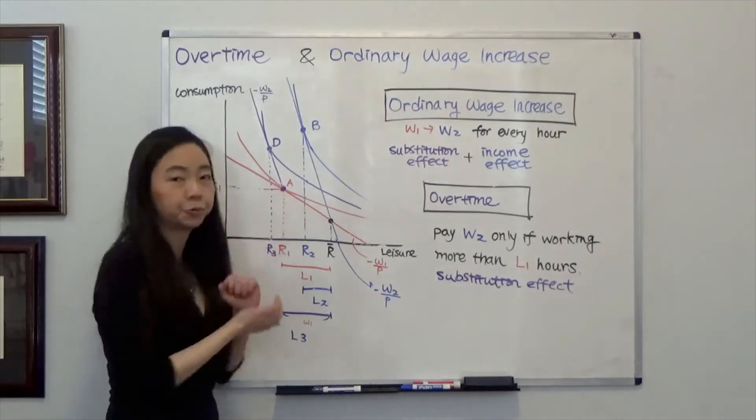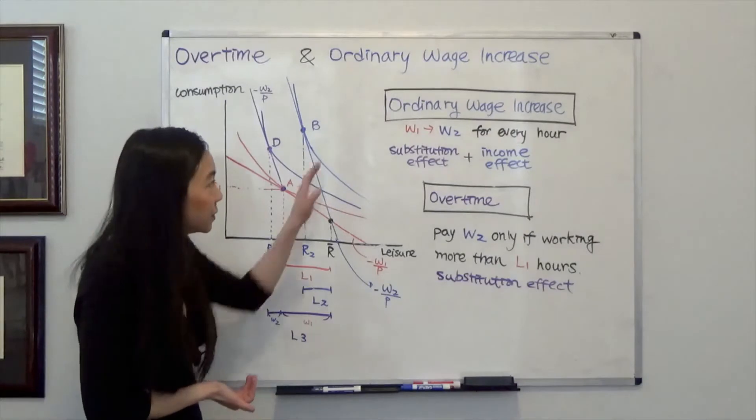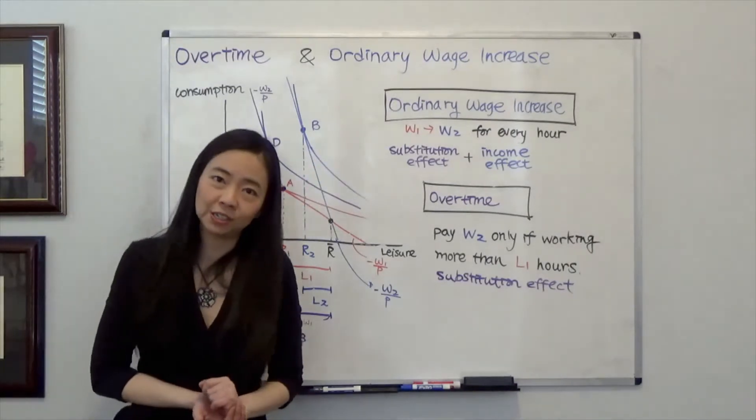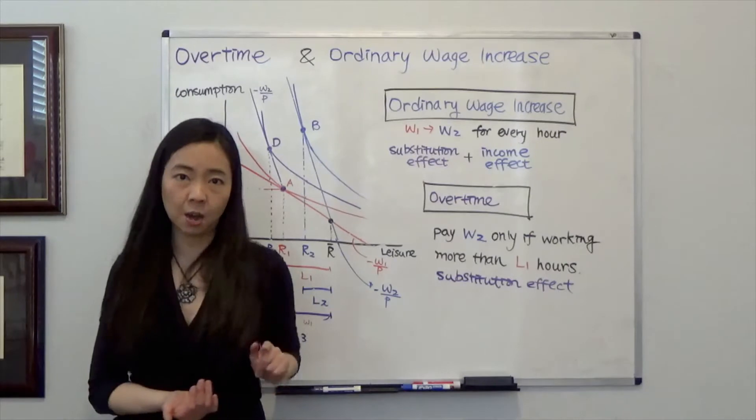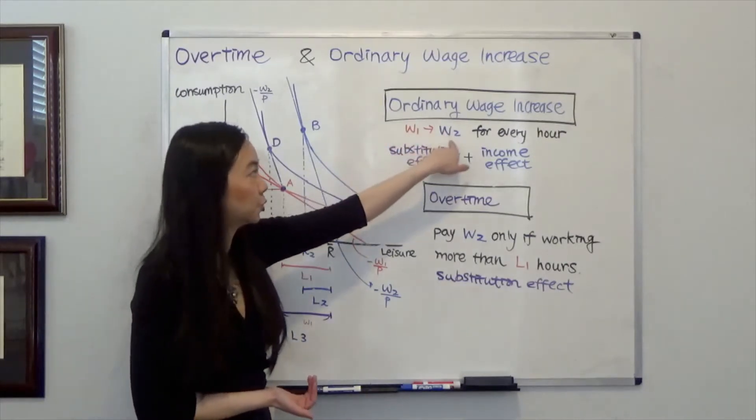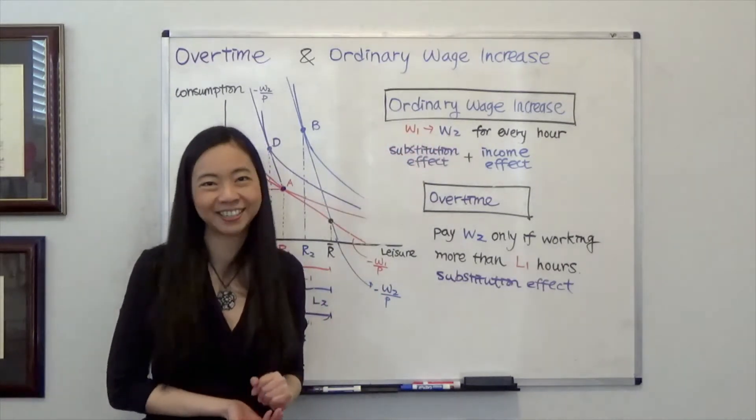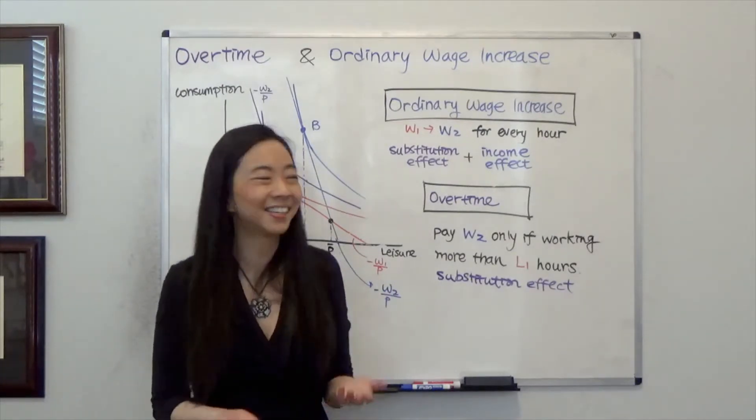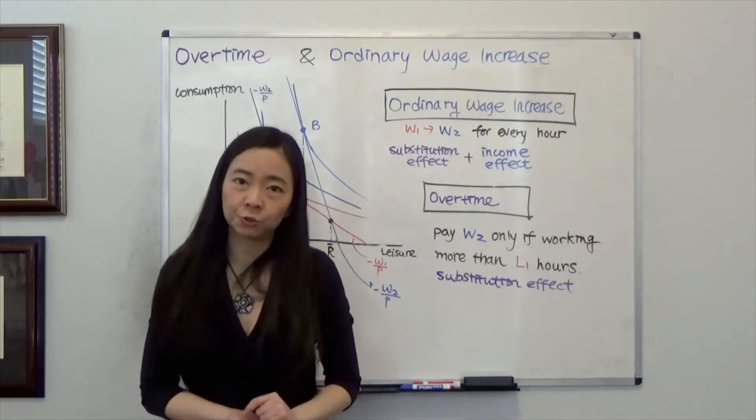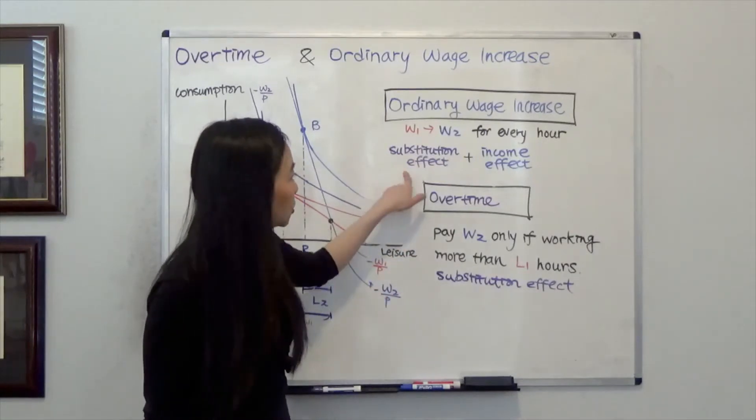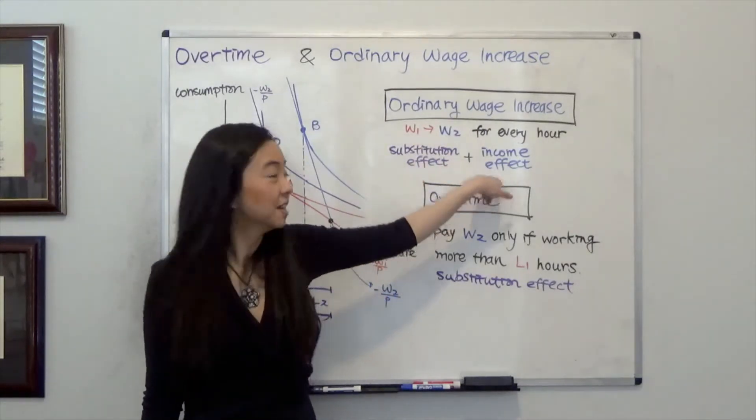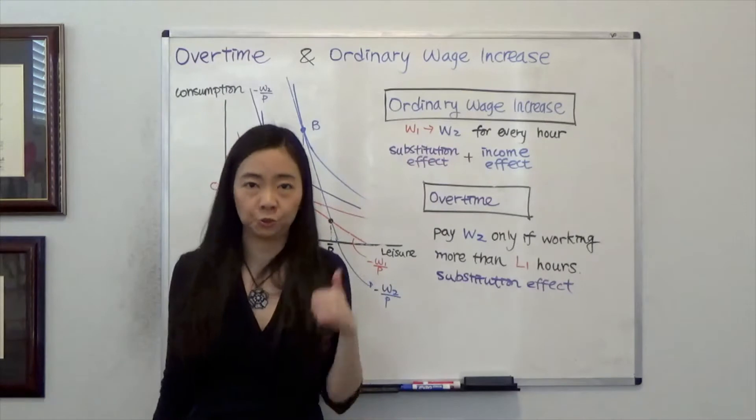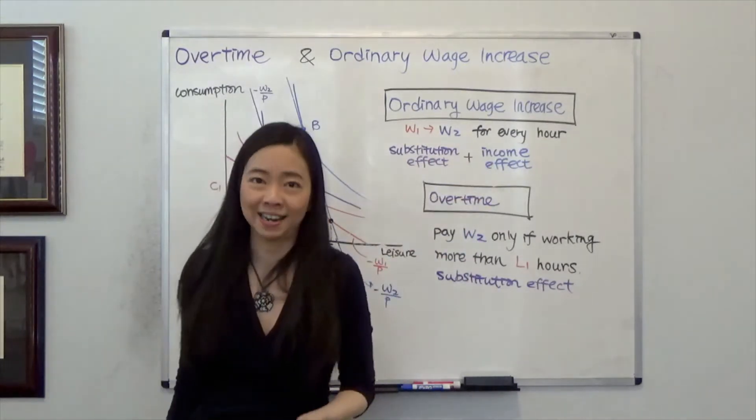Now, suppose there is an ordinary wage increase. That means my wage is going up from W1 to W2 for every hour I work. From the previous backbending labor supply video, we learned that when there is a wage increase, there are both substitution effect and income effect. Substitution effect is going to ask you to work more. Income effect will tell you to work less.